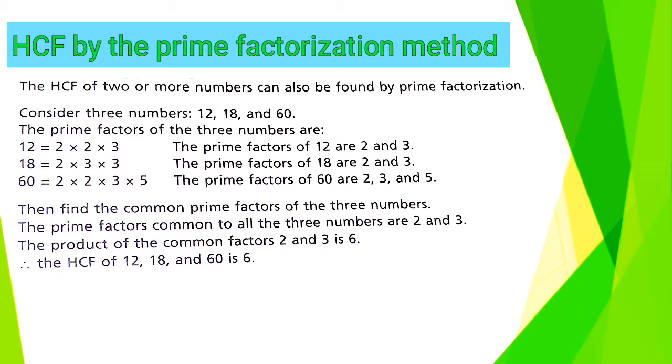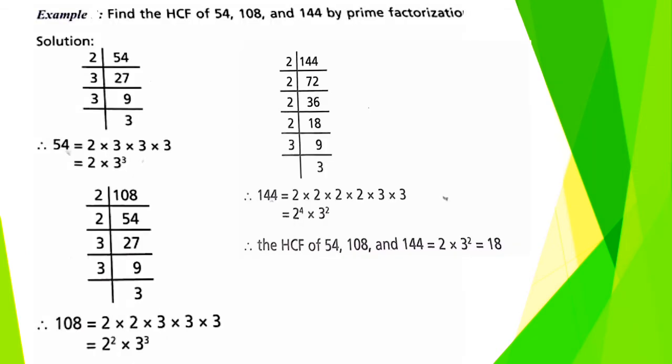After that, we have to multiply it. Such as 2 and 3 is equal to 6. So 6 is the highest factor of 12, 18 and 60. I will give you an example of it. Find the HCF of 54, 108 and 144 by Prime Factorization.